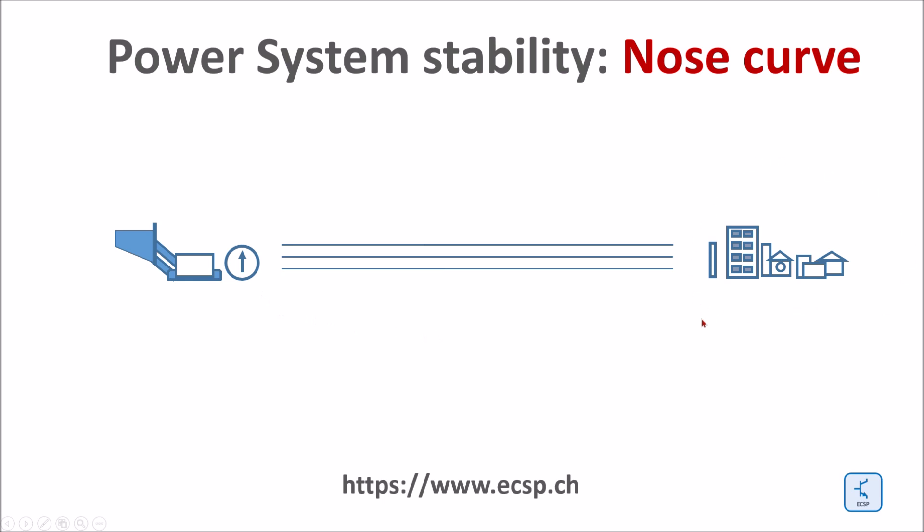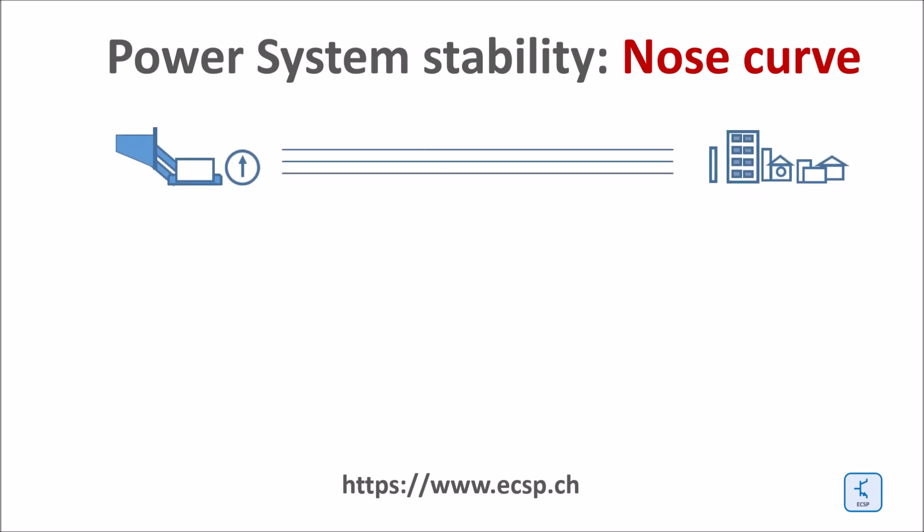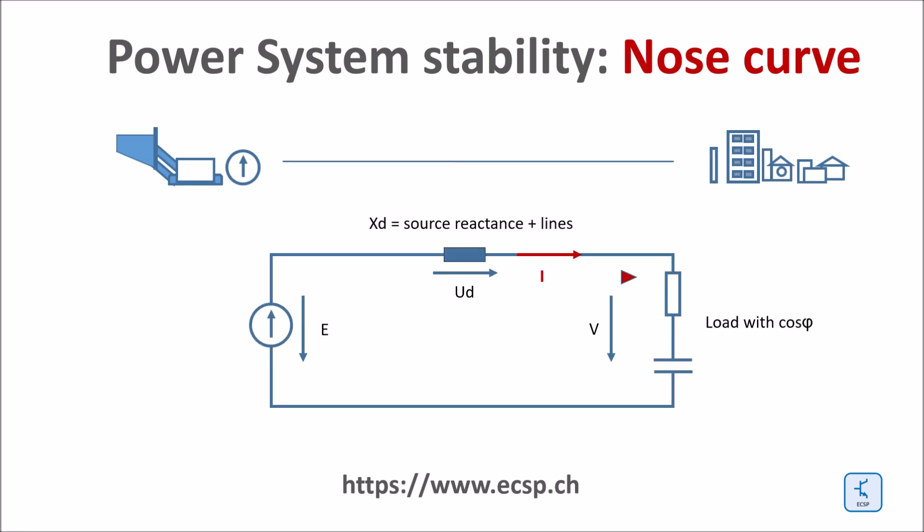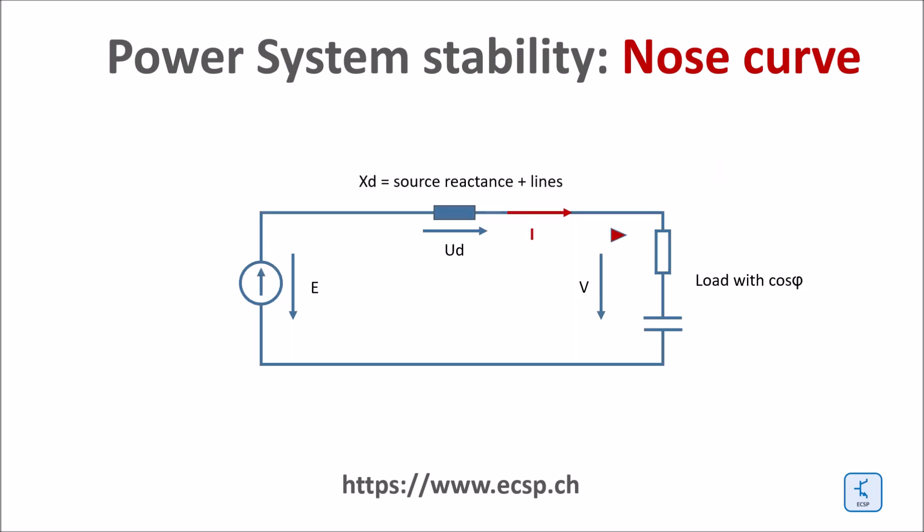And we want to know now the voltage curve over the power at this specific load. Let's see now how the model for such a simplified arrangement looks like. We have a three phase system, but since the case is symmetrical, we can look at only one phase. Here is now the simplified model, which I have already shown previously. And let's see now how this interaction works so that we get this nose curve.